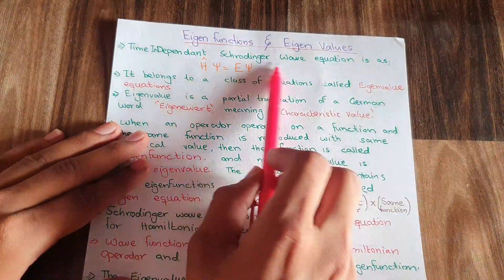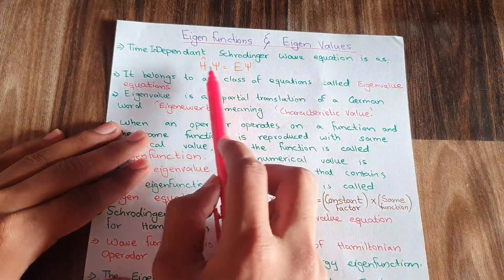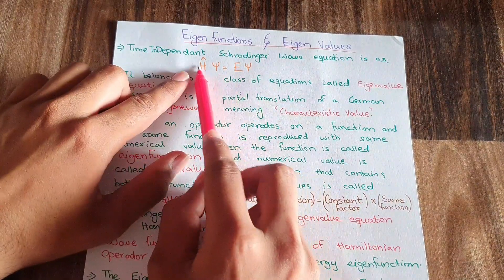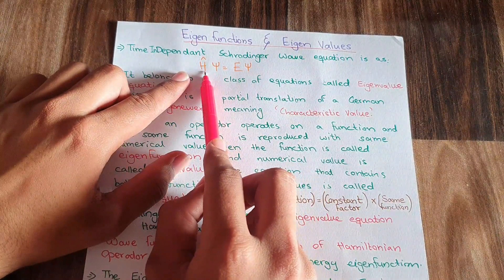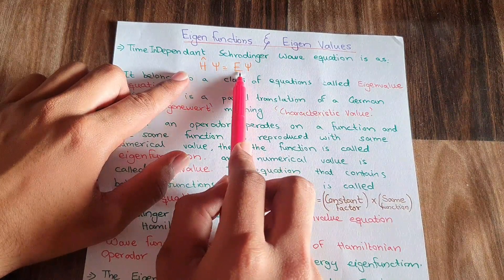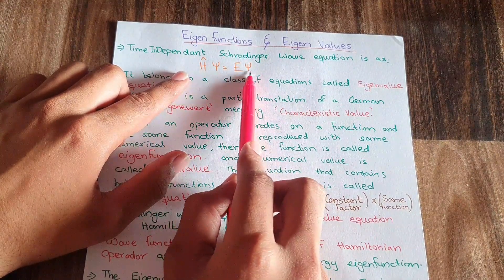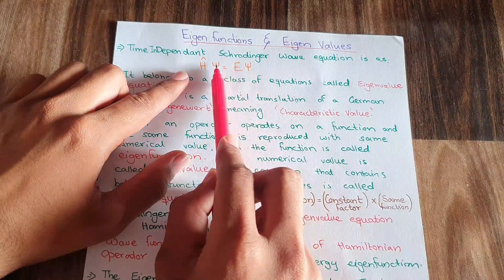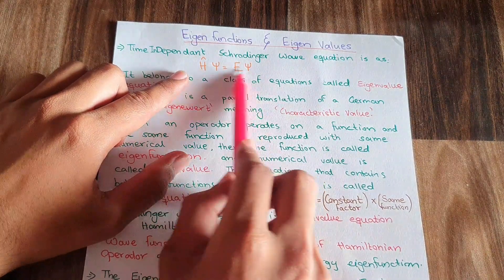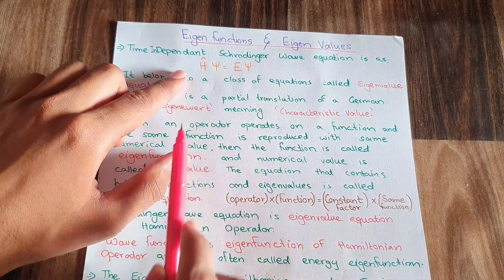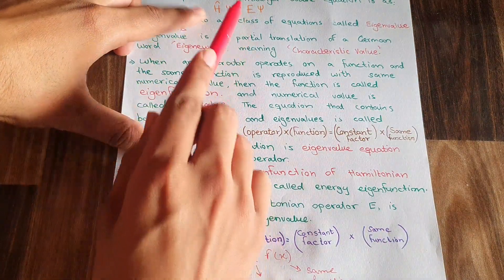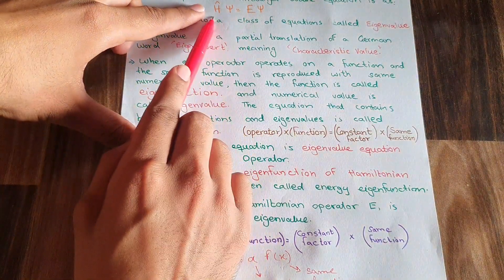The time-independent Schrödinger wave equation is given as Ĥψ = Eψ. Here Ĥ is the Hamiltonian operator being applied on the function ψ, and it is giving out a constant factor E multiplied by ψ — the same function that was on the left hand side of the equation. So I can say that this equation follows the general structure of the eigenequation. Here Ĥ is the operator.